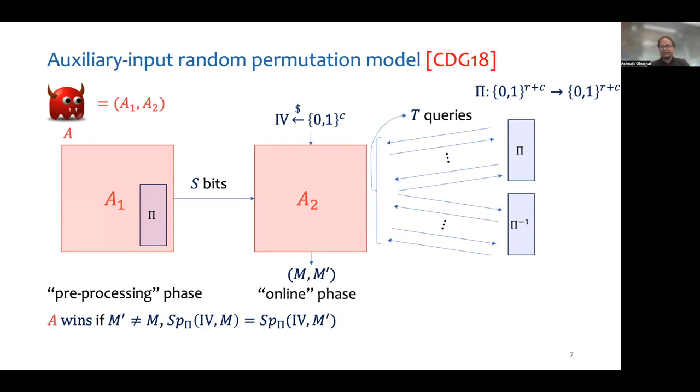The adversary wins if the online phase outputs a pair of distinct messages that hash to the same output. We refer to such an adversary A as an ST adversary, and we define the advantage parameterized by ST as the maximum probability of an ST adversary winning this game. Coretti et al. gave a tight characterization of this advantage.